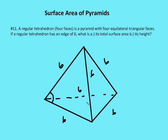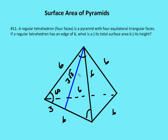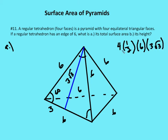Since we have an equilateral, equiangular triangle, all angles equal 60 degrees. Drawing the altitude on one of the faces — which is also the slant height of the face — half the base length is three. Since this side is opposite the 60-degree angle, the altitude of the triangle is three root three. So the total surface area is four times one-half times six times three root three, which equals 12 times three root three, or 36 root three. The answer to A is 36 root three.